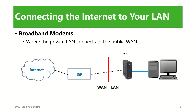Regardless of the technology used to get the internet connection to your premises, the setup inside your home is pretty standard. You use a modem to connect to the service provider's network. A broadband modem converts the incoming signal from your phone line, cable line, fiber optic line, or satellite dish into a digital signal that can be sent to a computer or to a broadband router. The modem is the place where the private LAN connects to the public one.